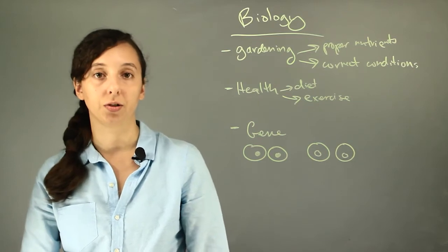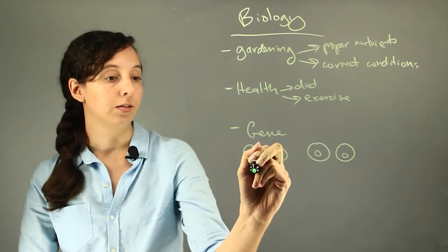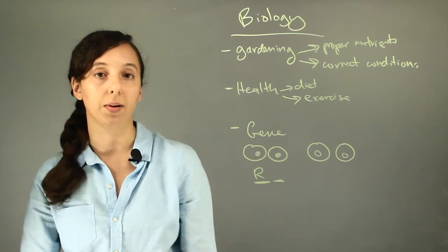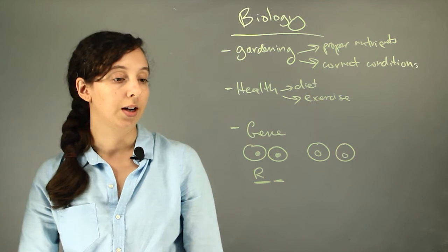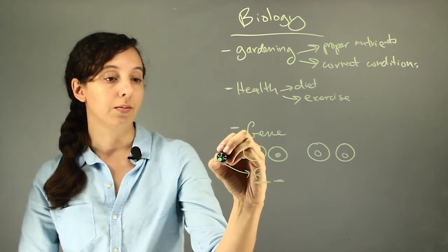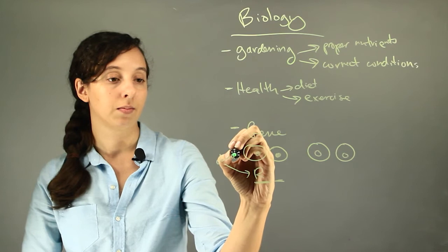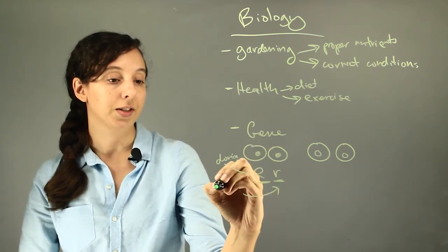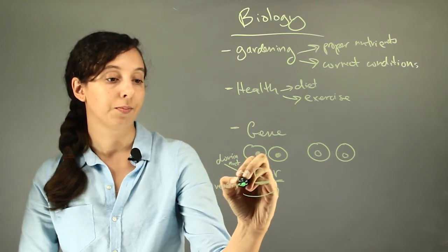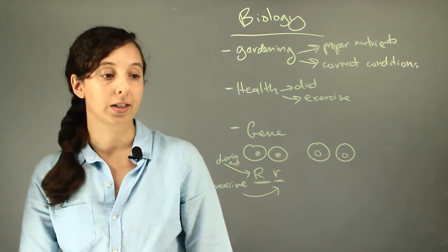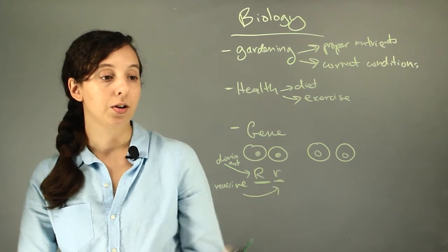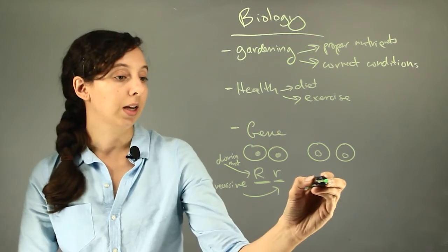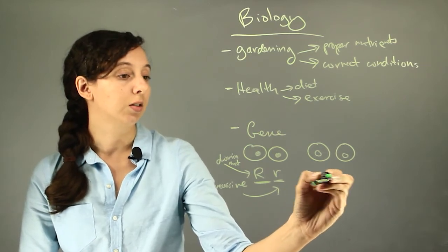So the way that genes work is that you have two little slots and they'll be filled with the genes from your parents. If you have a big R this is dominant. If you have a little r this is recessive. So the way that biology works is that between brown and blue, brown is dominant so it's uppercase and lowercase is recessive so it's blue and lowercase.